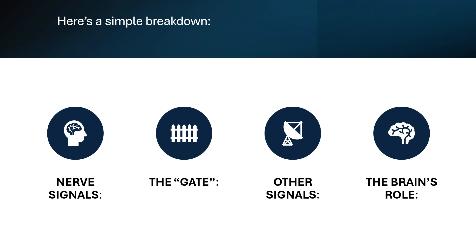So what happens when you get injured? The nerves will send pain signals from the affected area to your spinal cord. The spinal cord acts like a gate — it can either open to let pain signals through to the brain, or it can close to block them.